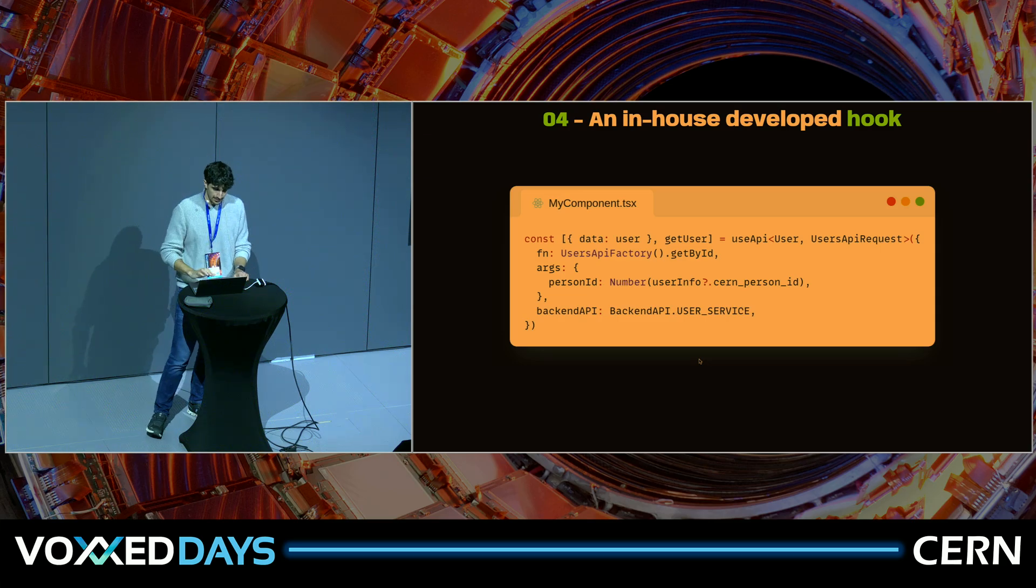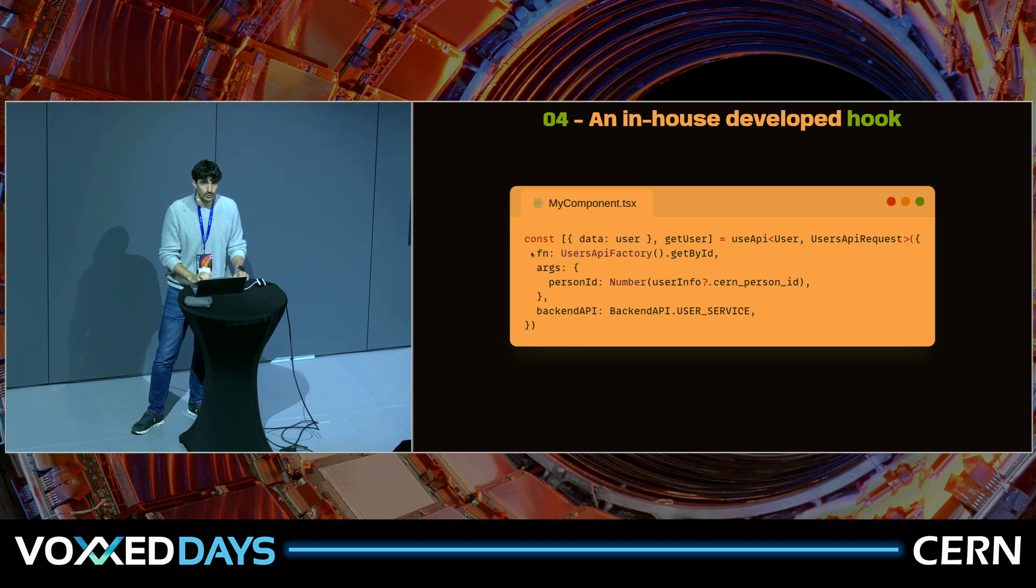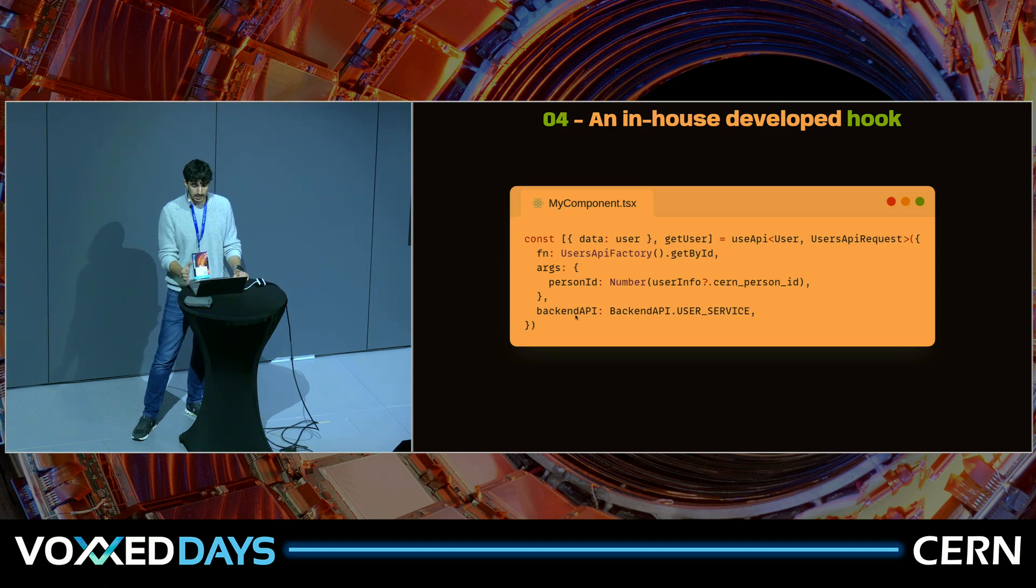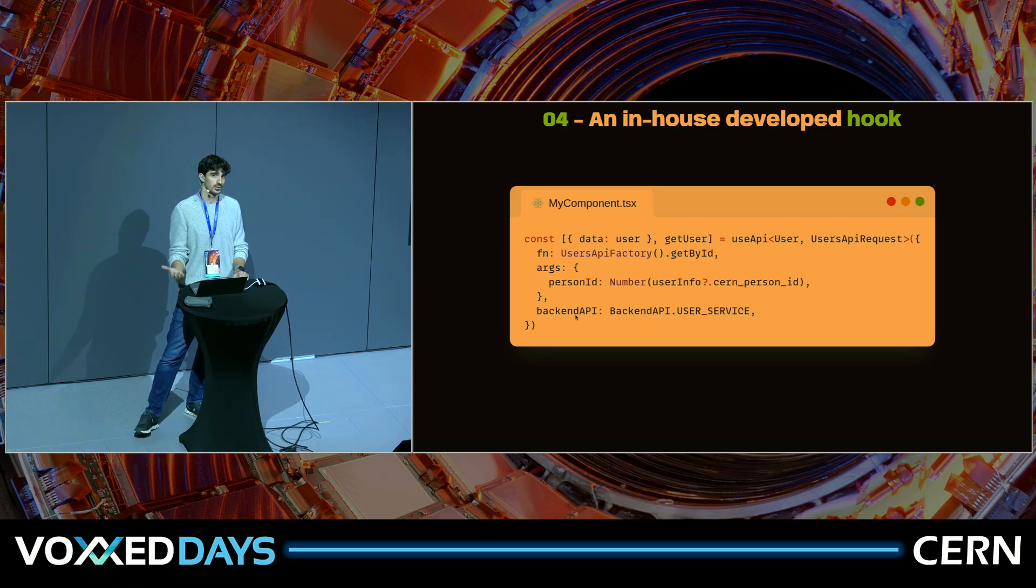Let's have a quick look at this iteration of useAPI. We have three arguments you can see here. We have fn, the function that we want to call. We have args, which are the arguments that you want this function to be called with. And then we have an optional backend configuration attributes for special cases. I would say this is already a great achievement that is having a considerable impact on the way we develop our React applications in the CERN Business Computing Group as of now.